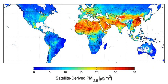Atmospheric particulate matter, also known as particulate matter or PM, describes solids and/or liquid particles suspended in a gas, most commonly the Earth's atmosphere. Particles in the atmosphere can be divided into two types depending on the way they are emitted. Primary particles, such as mineral dust, are emitted into the atmosphere. Secondary particles, such as ammonium nitrate, are formed in the atmosphere through gas to particle conversion.